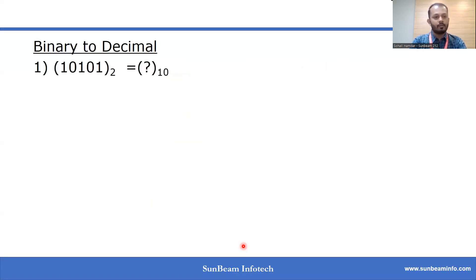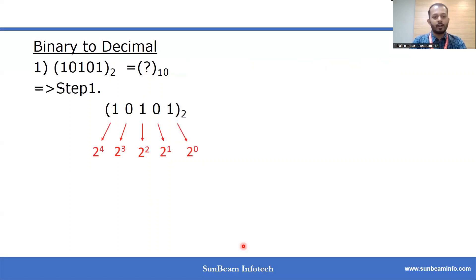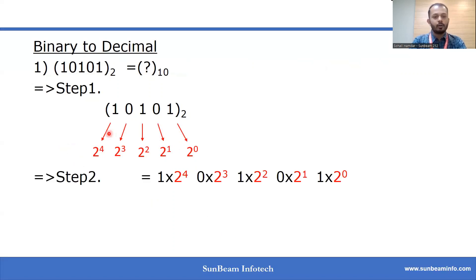For example, take the binary number 10101 and convert it to decimal. First, we find the positional values for each digit. In step 2, we multiply each digit by its positional value: 1 is multiplied by 2 raise to 4, 0 by 2 raise to 3, 1 by 2 raise to 2, 0 by 2 raise to 1, and 1 by 2 raise to 0.